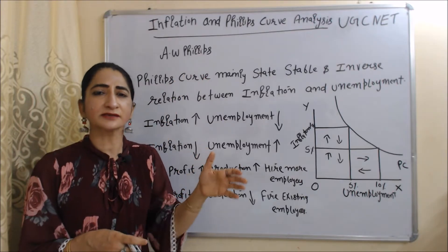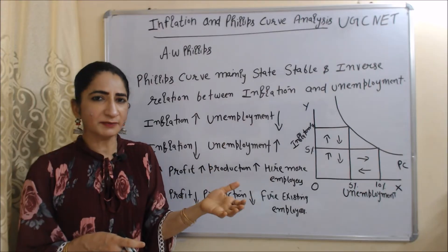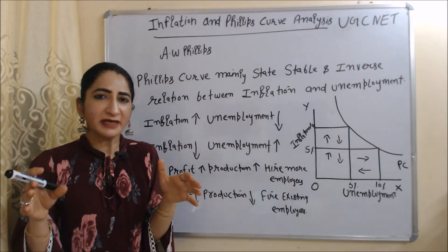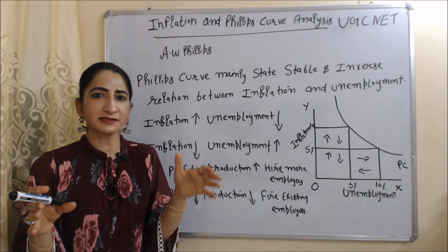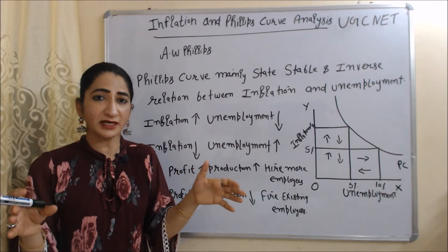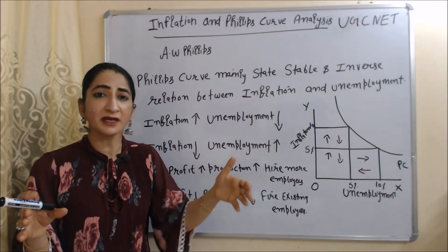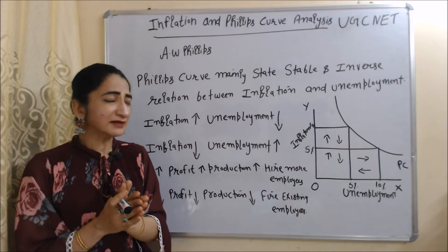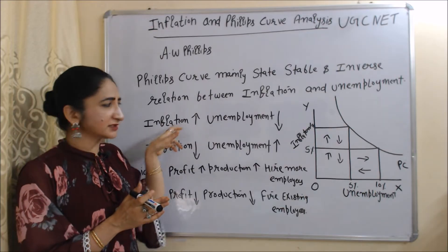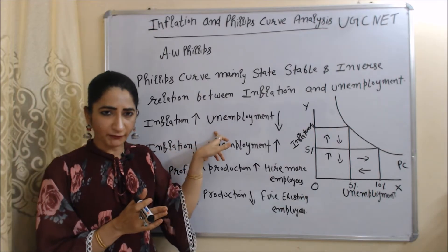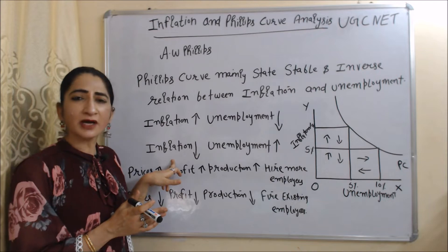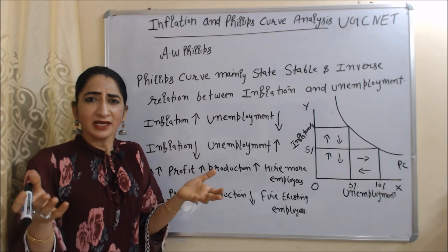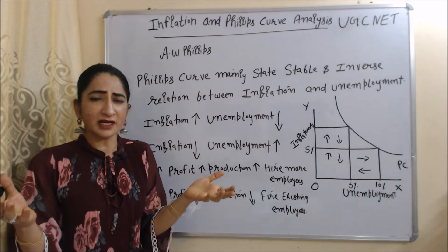The Phillips Curve mainly tells us the stable and inverse relation between unemployment and inflation. That means when inflation increases, unemployment falls, and when inflation falls, unemployment will increase. But why do inflation and unemployment have an inverse relation?